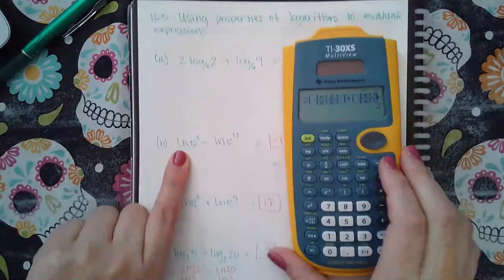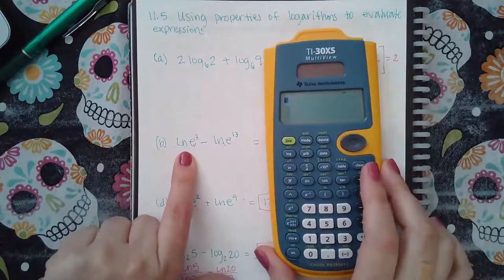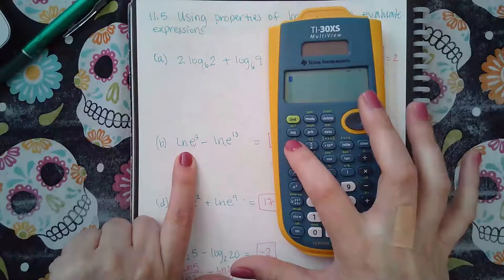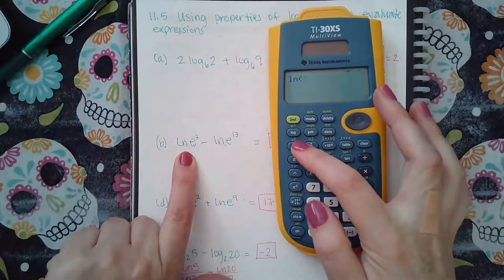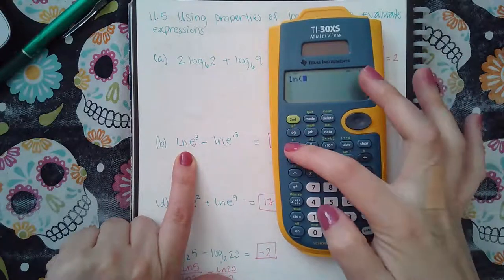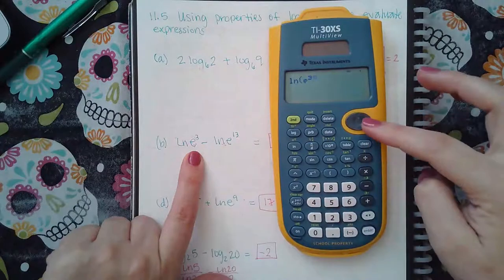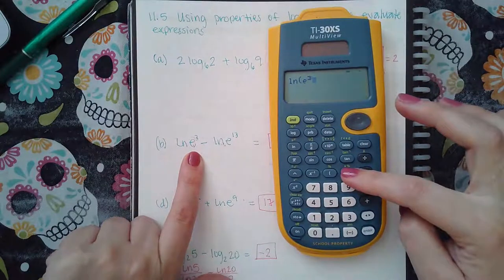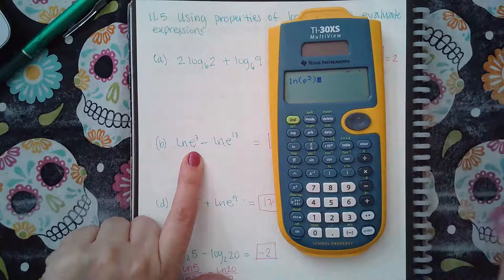Now for this one, we don't have to change the base because we have an ln button in our calculator. I used ln, and to get the e, I did second ln. I put my exponent, go to the right so I can come down from the exponent, close the argument,